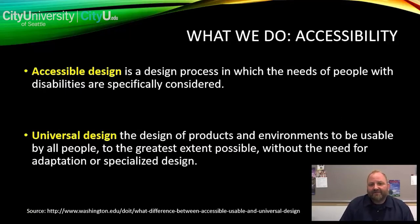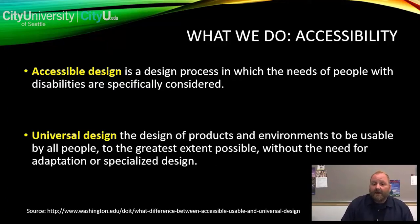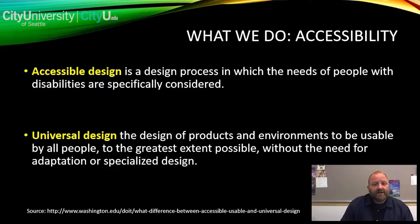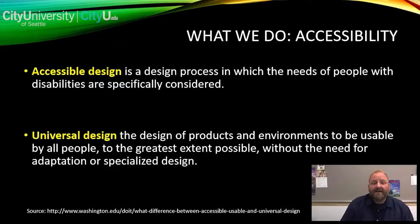Let's talk about accessibility first. We're talking about accessible design and universal design. Accessible design is about providing for the needs of people with disabilities — blindness, hearing issues, limited mobility. Universal design, though, is also about producing an environment that's truly equal for everyone, so that nobody has to go to a different place in order to get their learning met.